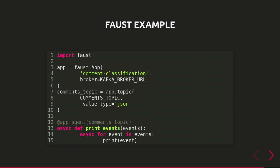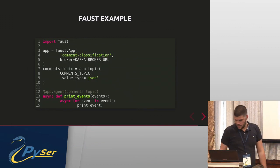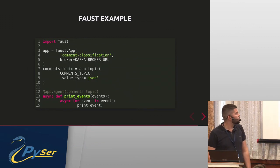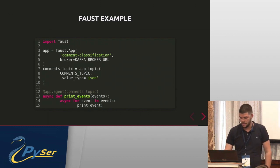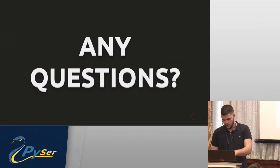You connect to the topic you want to consume messages from. The main logic is a stream processor function that receives events and does some processing on them. I'm not doing anything smart here, just printing it. This is the last part of the presentation, but I want to walk you through the source code of the project — I'll put it on GitHub so you can access it later.